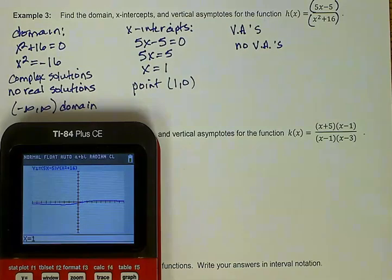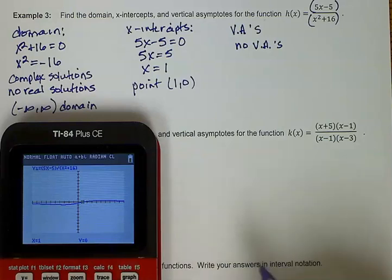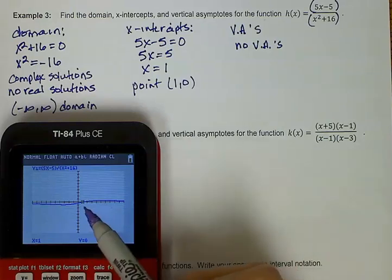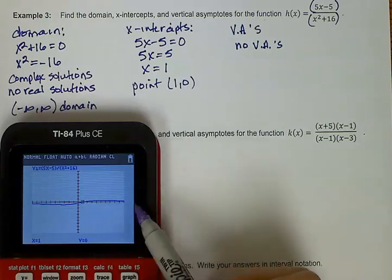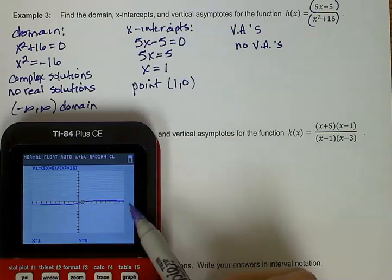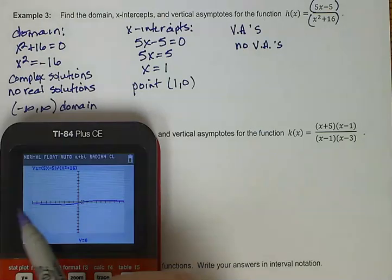And I can do a trace and see that even better. So there's my x-intercept. What this means is that as the graph goes this way, the graph might get closer to the x-axis, but it's never actually going to touch it. And the same way on this side.